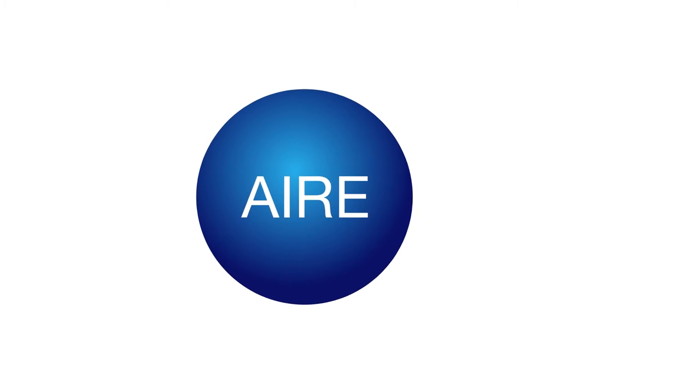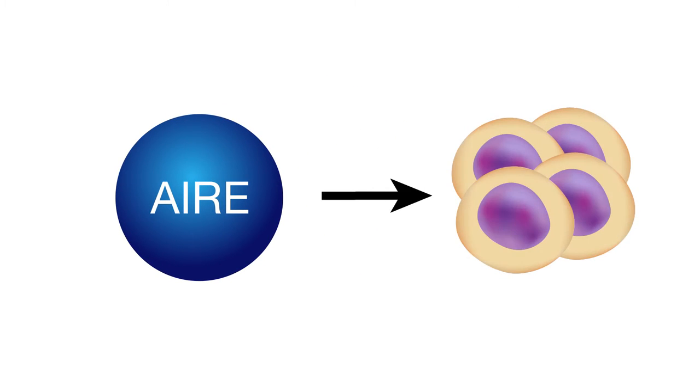Over the past several decades, researchers have worked to understand the activities of a special protein called AIRE, a transcription regulator without which our immune system is unable to tell self-cells from invaders.